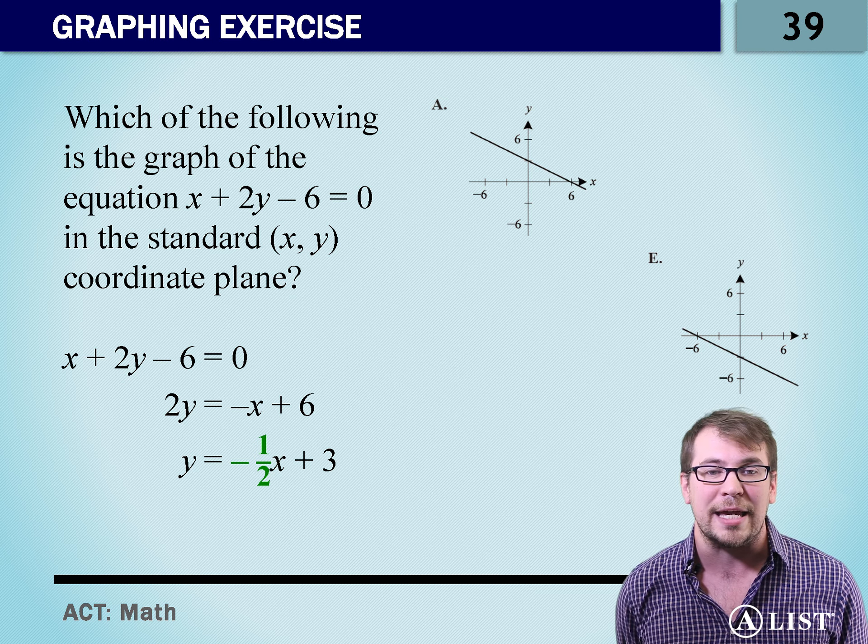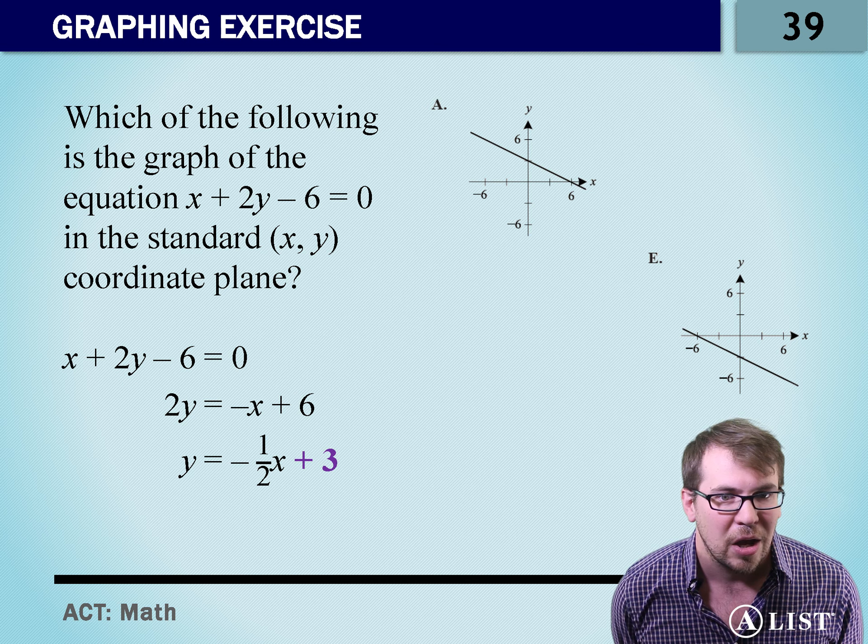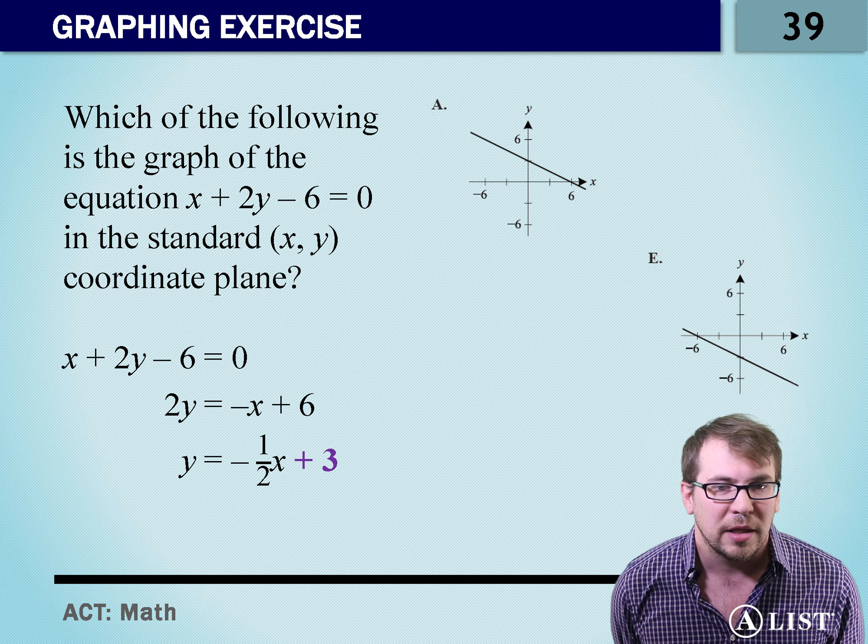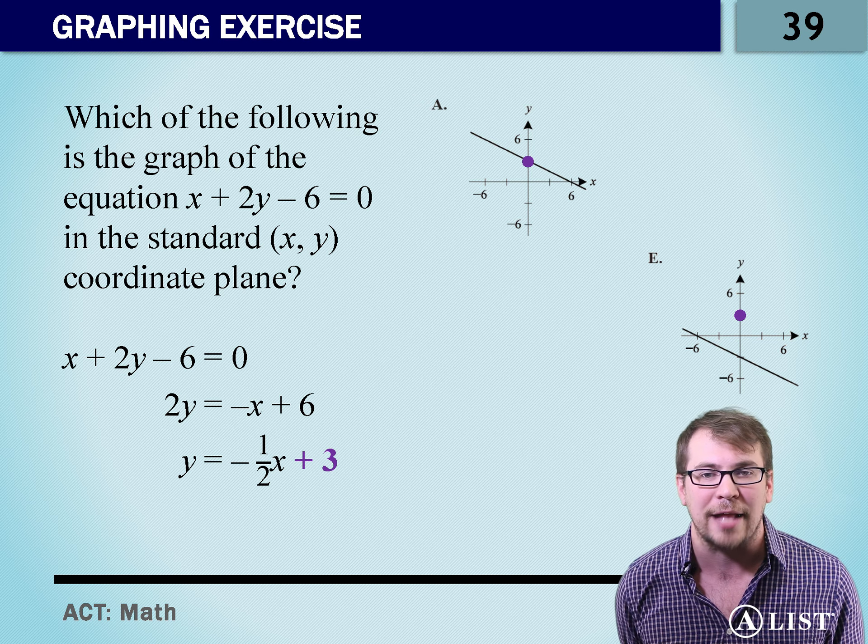We're stuck between a and e now. y equals mx plus b where m is the slope and b is the y-intercept. Look at that. We've got 3. Which one of these graphs crosses the y-axis at 3?